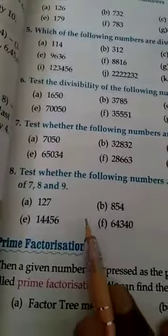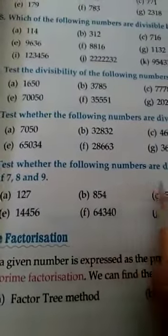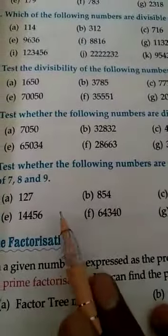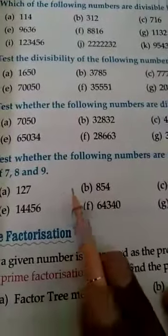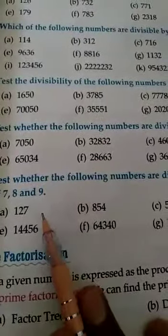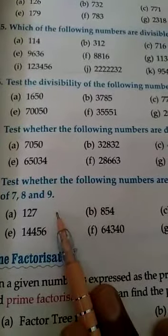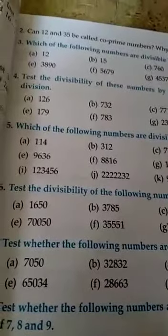Now question number 8: test whether the following numbers are divisible by 7, 8, or 9, or all of them. You will check one by one — divide by 7, then check the divisibility rule of 8, then the divisibility rule of 9. If divisible by only 7, write divisible by 7. If divisible by 7 and 8 both, write divisible by 7 and 8. If divisible by 7, 8, and 9 all, write divisible by 7, 8, and 9. We have discussed almost all the questions — now you will solve and complete exercise 4.1. Thank you.